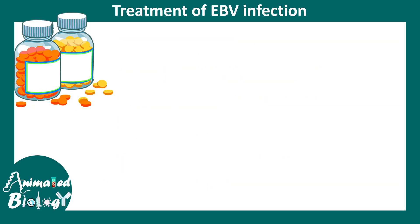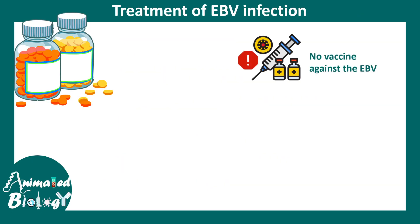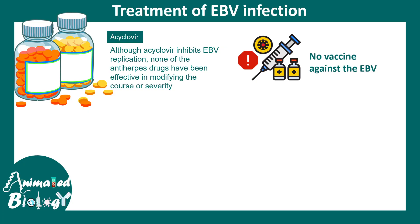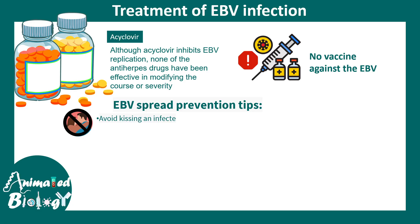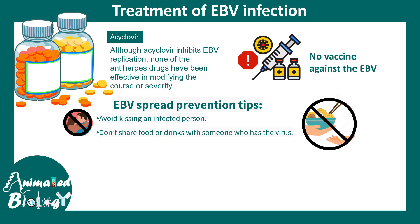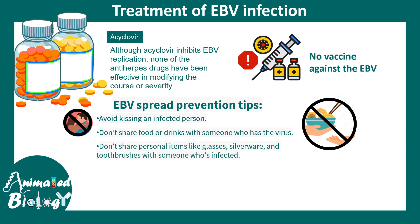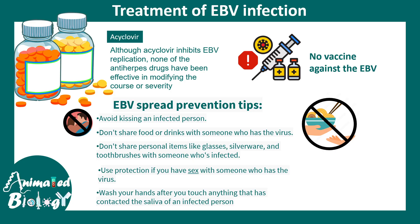There is currently no vaccine against EBV. Acyclovir can interfere with viral propagation but is not a definitive treatment. Prevention measures include avoiding kissing an infected person, not sharing food, drinks, or personal items like glasses and silverware, using protection during sex with an infected person, and washing hands after accidental contact with an infected individual.